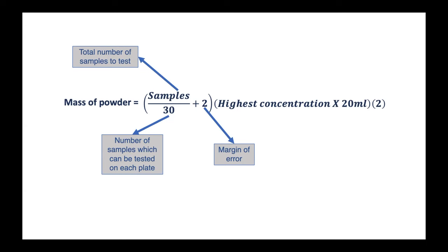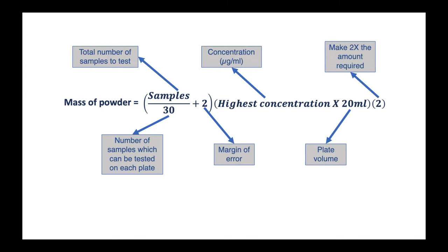It's important to account for technical issues that can arise. Our highest concentration tested in micrograms per milliliter, 20 milliliters per plate, this is our final plate volume, and then finally we need to make twice the amount required, and the reason for that will become obvious when I explain how we do our dilution series.